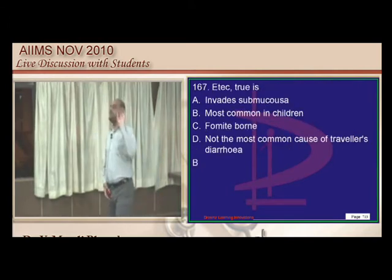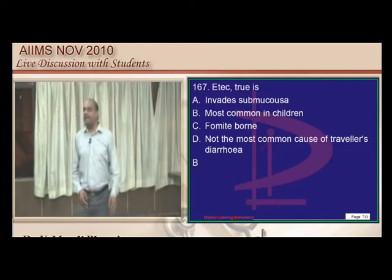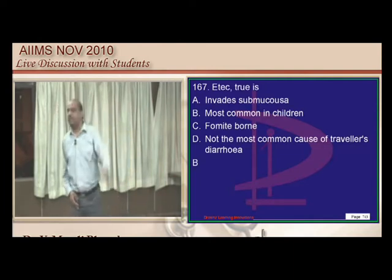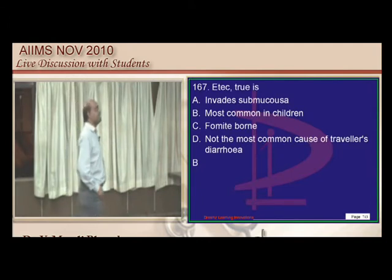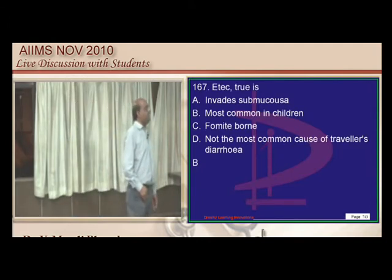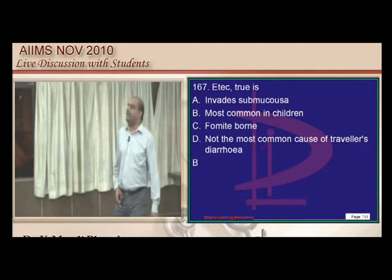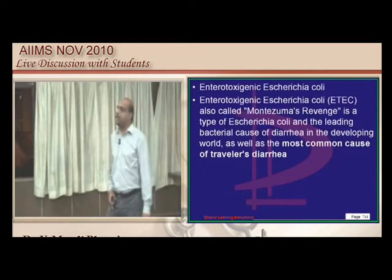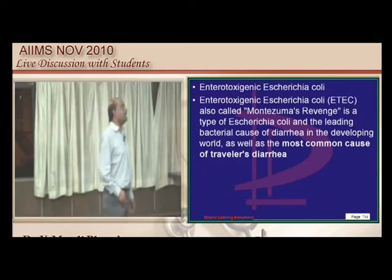Toxigenic E. coli does not invade the submucosa, unlike enteroinvasive E. coli which is capable of invading the submucosa. Toxigenic E. coli is very common in children and is the most common cause of traveler's diarrhea.